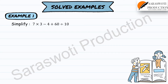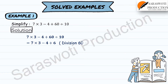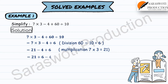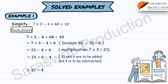Example 1: Simplify 7 × 3 minus 4 plus 60 divided by 10. First, perform division: 60 divided by 10 equals 6, giving 7 × 3 minus 4 plus 6. Then multiplication: 7 × 3 equals 21, giving 21 minus 4 plus 6. Addition is performed before subtraction: 21 plus 6 equals 27, then 27 minus 4 equals 23.